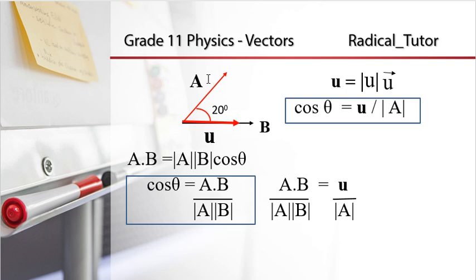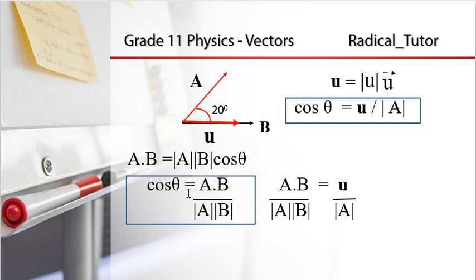The projection of vector A in the direction of B uses the unit vector along B. The component of A along B equals the magnitude of A times cos theta. From the scalar product of two vectors, A dot B equals magnitude of A times magnitude of B times cos theta. So cos theta equals A dot B divided by the magnitude of A times the magnitude of B.